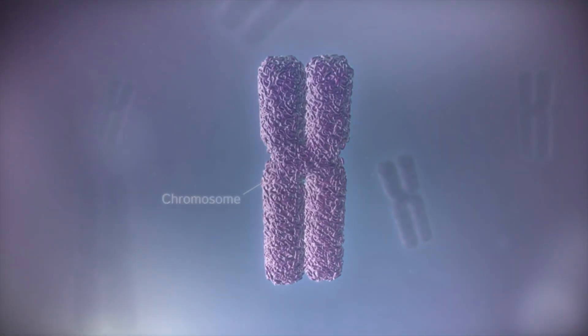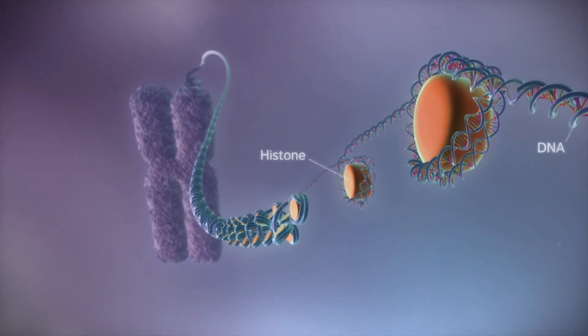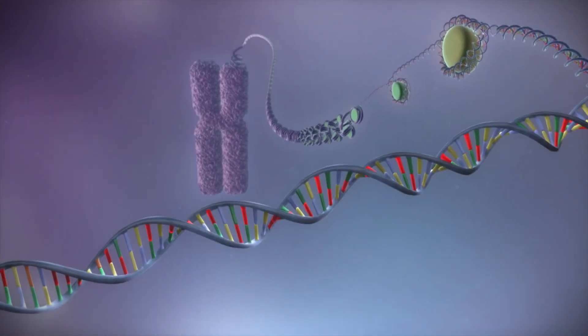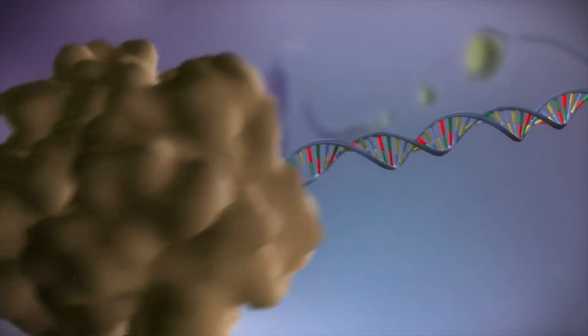The central dogma essentially explains how biology works. The central dogma explains how the instructions in DNA are converted into proteins and the way this is done.